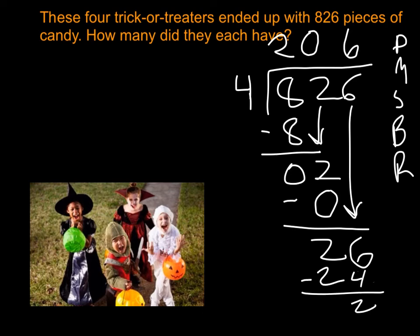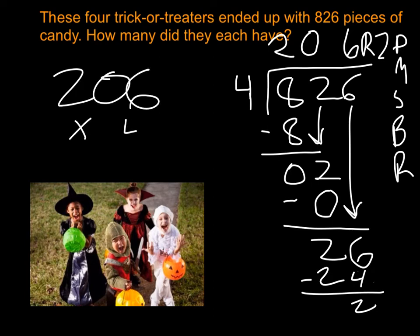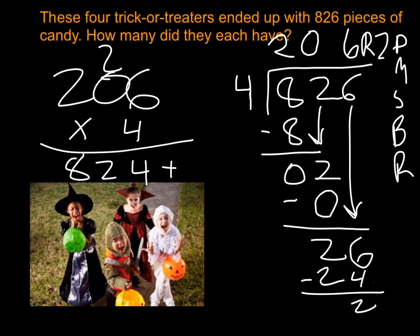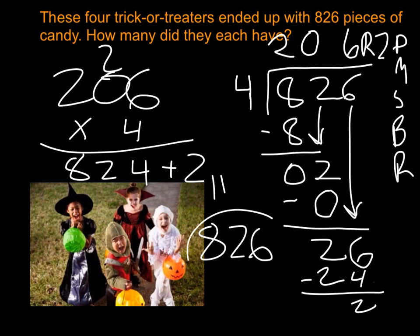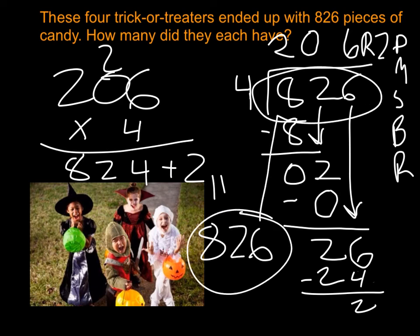Nothing left to bring down, so that 2 is our remainder. To check: quotient times divisor plus remainder. 206 times 4: 4, carry the 2, gives 824, plus 2 gives 826. That matches, so I know I'm correct. Each kid has 206 pieces with 2 left over — which I guess I can eat. I'll help them out.